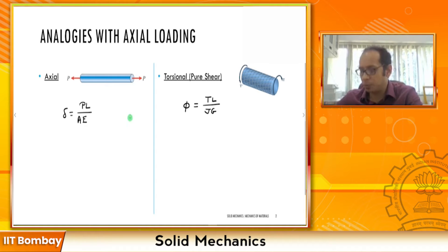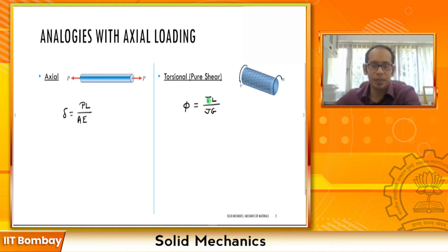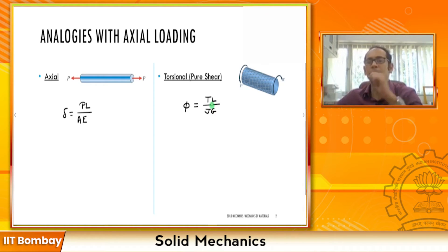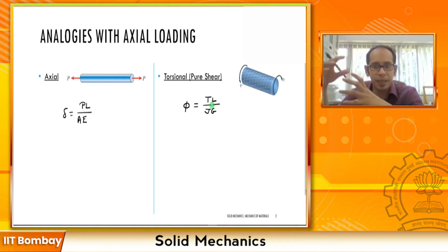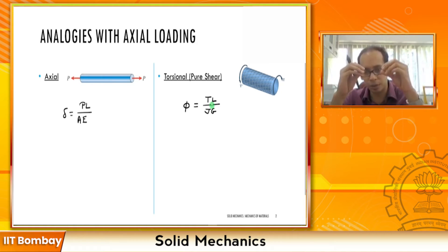Both delta and phi are measures of deformation — delta is the longitudinal displacement, phi is the angle of twist. On the right-hand side, P is the applied force and T is the applied torque. Both formulas depend on the length L of the member. In the denominator, A (area of cross section) corresponds to J (polar moment of inertia), and Young's modulus E corresponds to shear modulus G. Analogically, delta = PL/AE and phi = TL/JG look more or less the same.